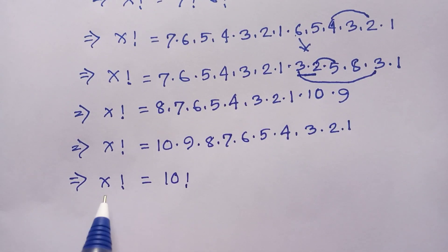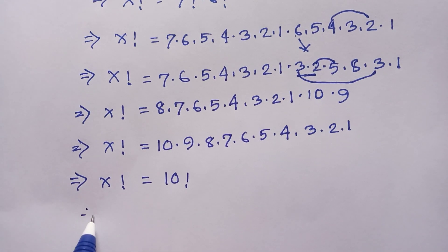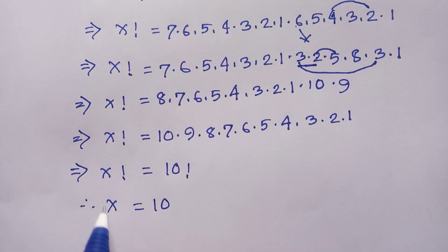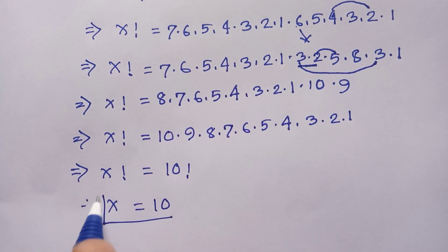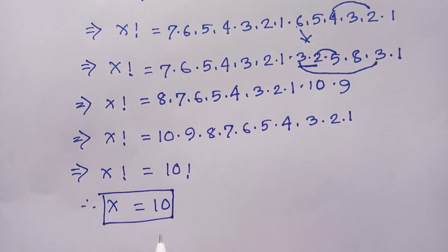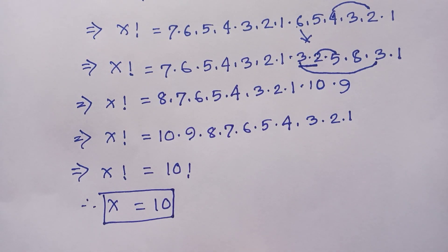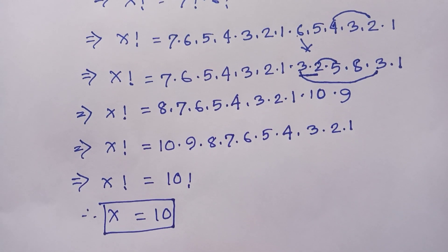Now we cancel out the factorial on both sides, so we get x is equal to 10. This is the value of x. If you like this video please subscribe to my channel for more videos. Bye bye.